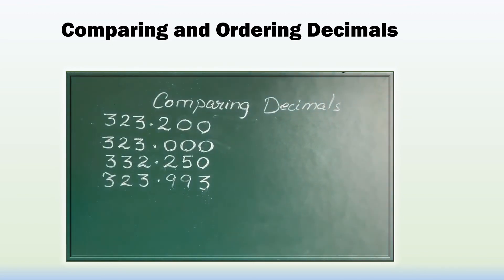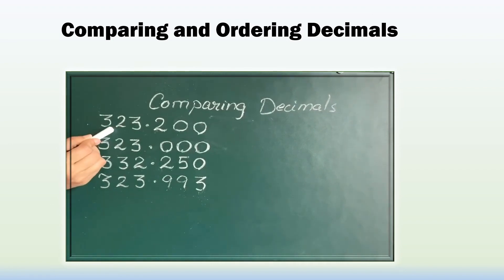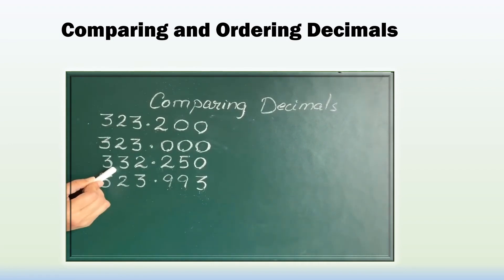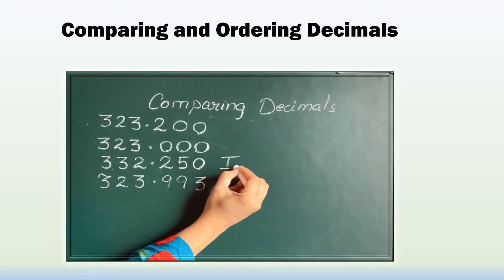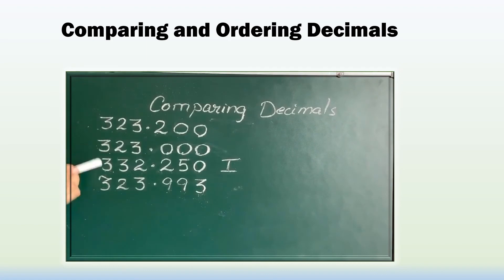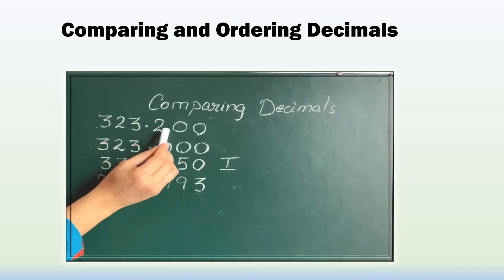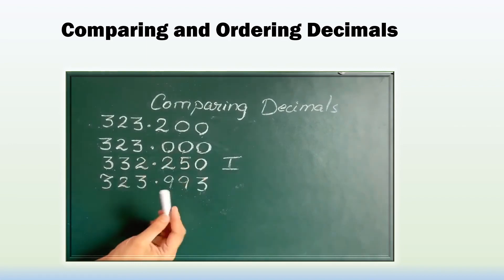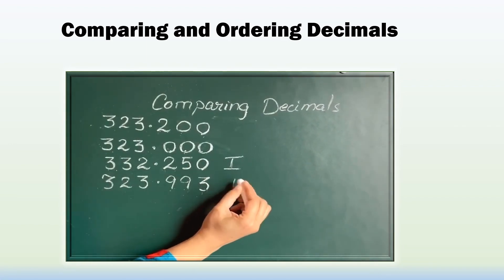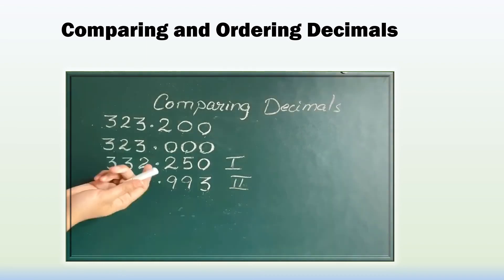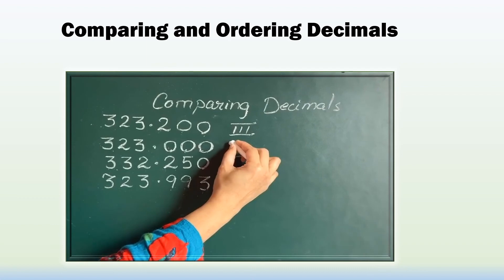Let's compare now to find the biggest. Comparing the whole number parts: 3, 23, 23, and 32 — so 32 is the biggest. For the next biggest, the remaining whole numbers are the same, so compare the decimal parts: 200, 200, and 000, and 993 — so 993 is the biggest among those. The second biggest is identified, followed by the third biggest, and the least number is last.